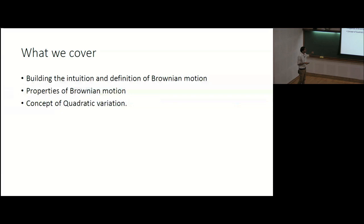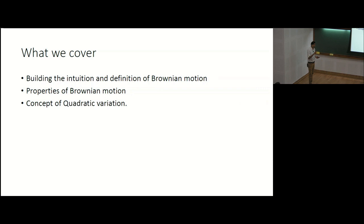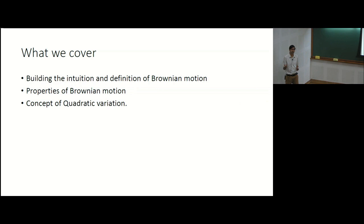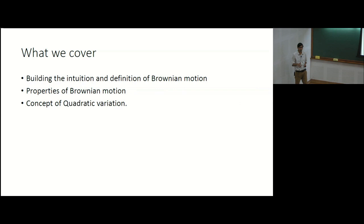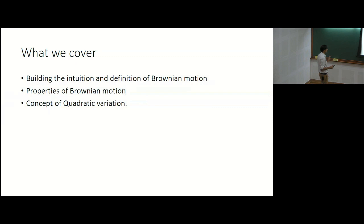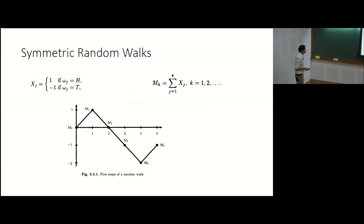In this lecture we will cover: how Brownian motion is constructed and its properties; a basic understanding of stochastic calculus needed to derive the Black-Scholes formula; and the derivation of Black-Scholes itself. We also look at quadratic variation, which is what distinguishes stochastic calculus from normal calculus.